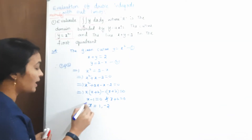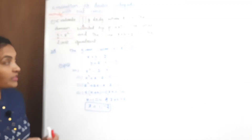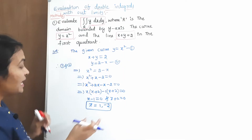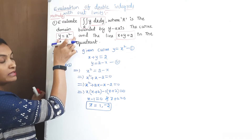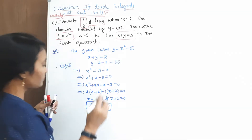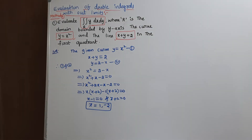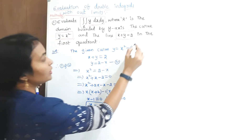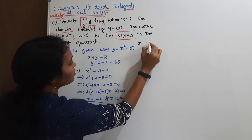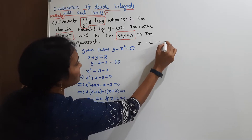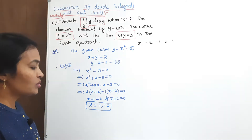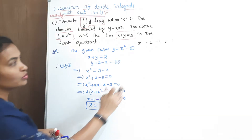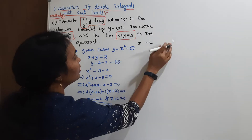No need to consider the x values directly just yet. First, put the x values into the first curve to get a table. The x values to consider are minus 2, minus 1, 0, and 1 — the curve lies between x equals minus 2 and x equals 1.